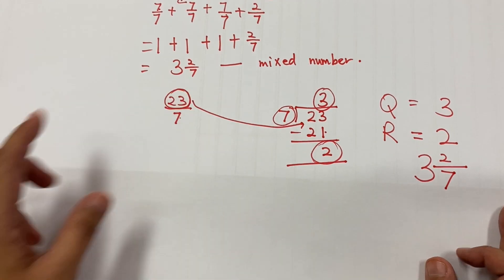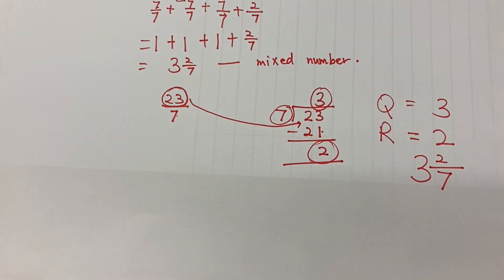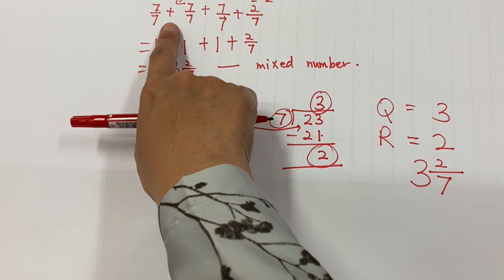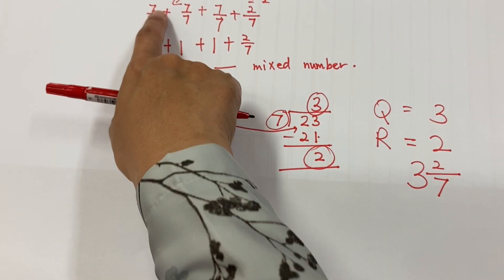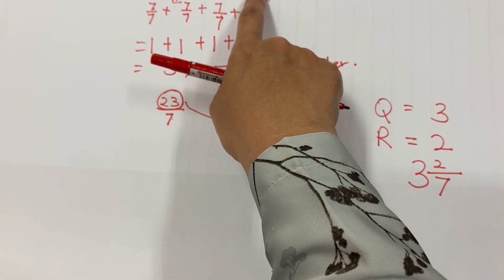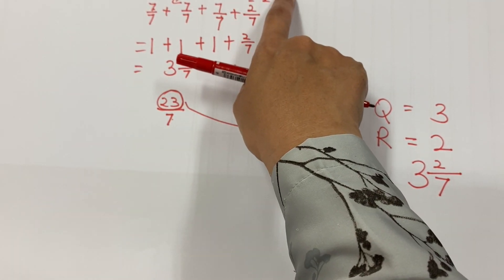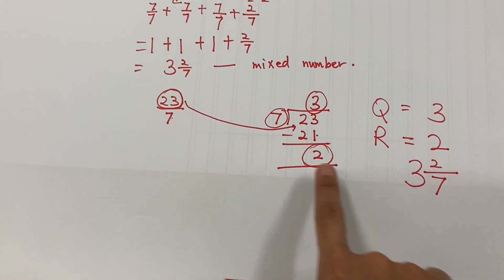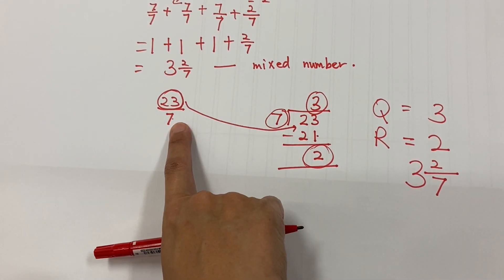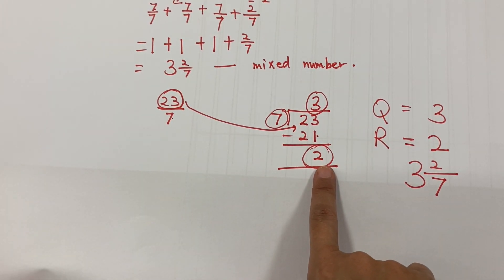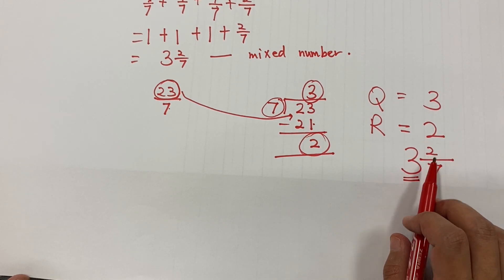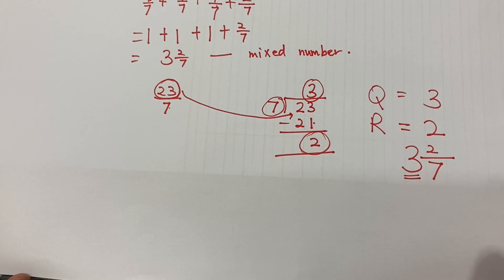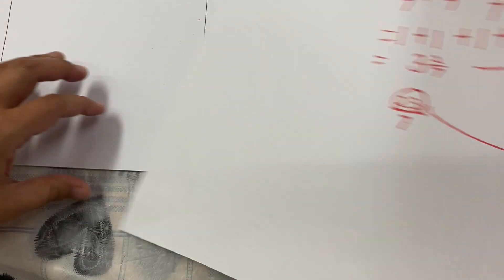So the answer is 3 whole and 2 out of 7. You can do it by division or by breaking it down into wholes — that's 3 whole 2 out of 7. You actually have 3 ways: you can do it by drawing, by breaking it down into whole numbers — look at the denominator and do 7 plus 7 plus 7, then take 23 minus whatever you've added to get 2 out of 7 — or you can divide: numerator divided by denominator, the quotient is your whole number, the remainder is the extra parts, and the 7 refers to the 7 equal parts.